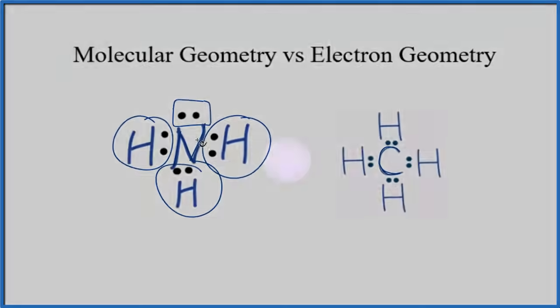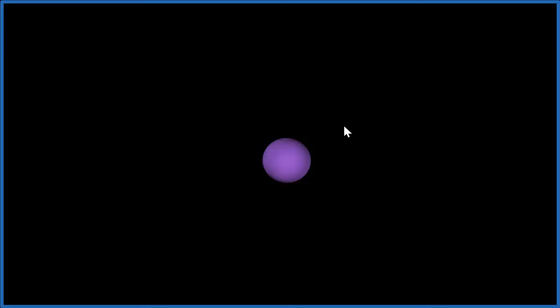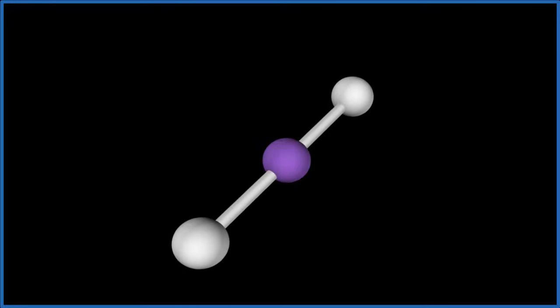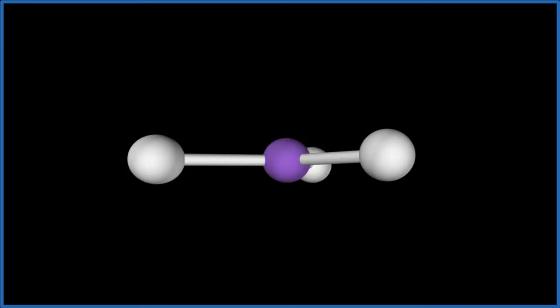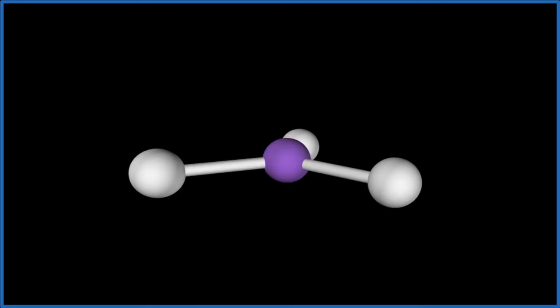Let's look at this in three dimensions. Think of the purple as that central nitrogen. We have three hydrogen atoms—one, two—and you see they spread out to be as far away as they can from each other. So right now, we have what's called trigonal planar. Everything's in one plane.